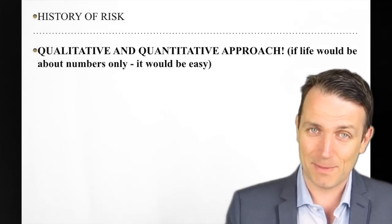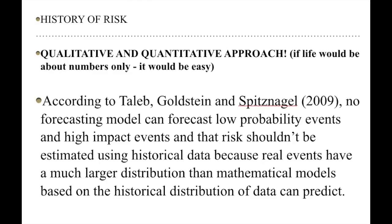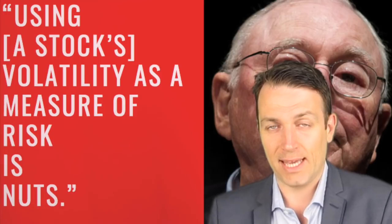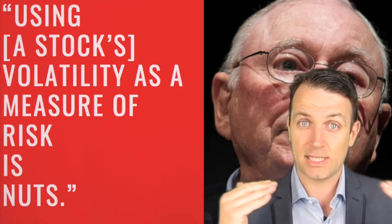Going a little deeper: according to Taleb, Goldstein, and Spitznagel (2009), no forecasting model can forecast low-probability, high-impact events, and risk shouldn't be estimated using historical data because real events have a much larger distribution than mathematical models based on historical data can predict. Examples include the subprime crisis in 2008–2009 and the dot-com bubble in 2000–2001. These things that constantly happen that nobody predicts beforehand — that's black swan risk, and it's also something to think about.